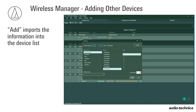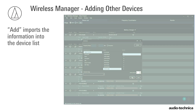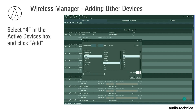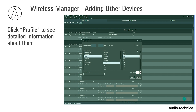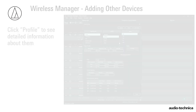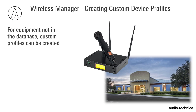Add imports the information into the device list. Next, add IEM systems from another manufacturer. Select four in the Active Devices box and click Add. If desired, click Profile to see detailed information about them. For equipment not in the database, custom profiles can be created.